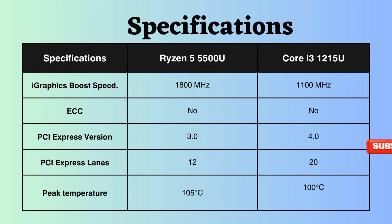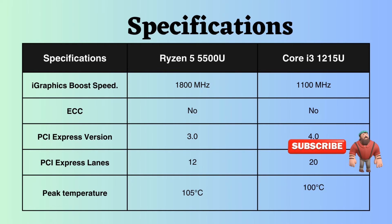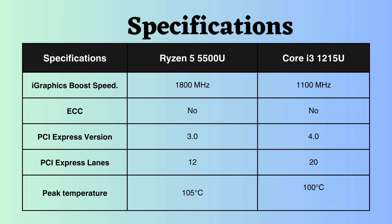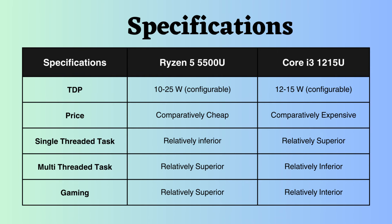This suggests that the Intel processor can handle more external devices than the Ryzen 5500U. The peak temperature supported by the Ryzen 5500U is higher than that of the Intel Core i3-1215U, indicating that the Ryzen 5500U can withstand higher temperatures. Both processors have configurable TDP, but the Intel i3-1215U has a lower TDP, making it slightly more power-efficient.